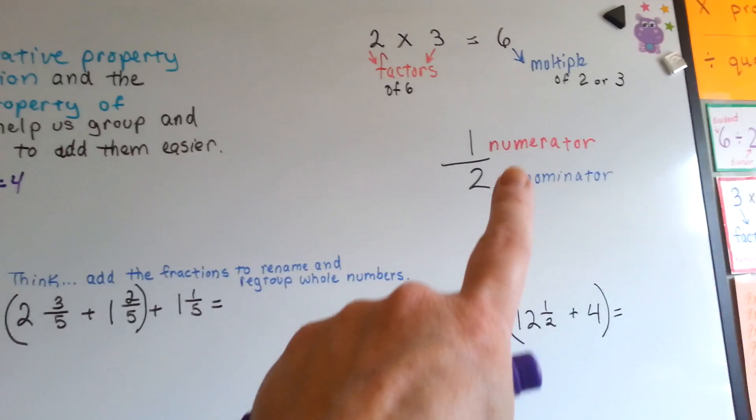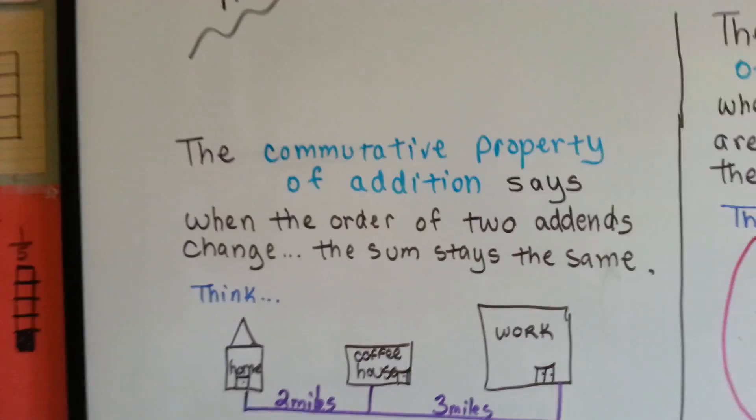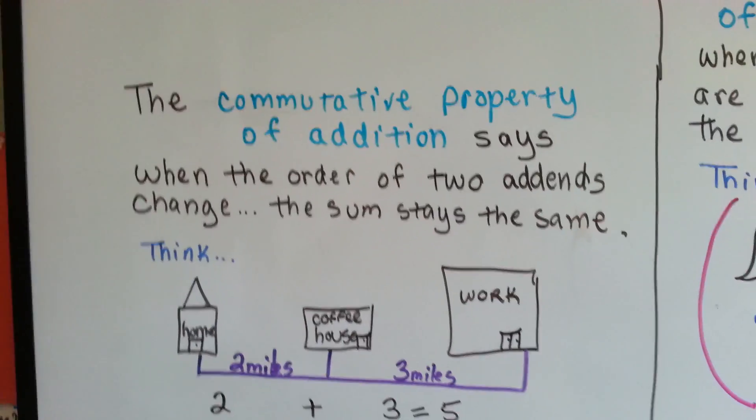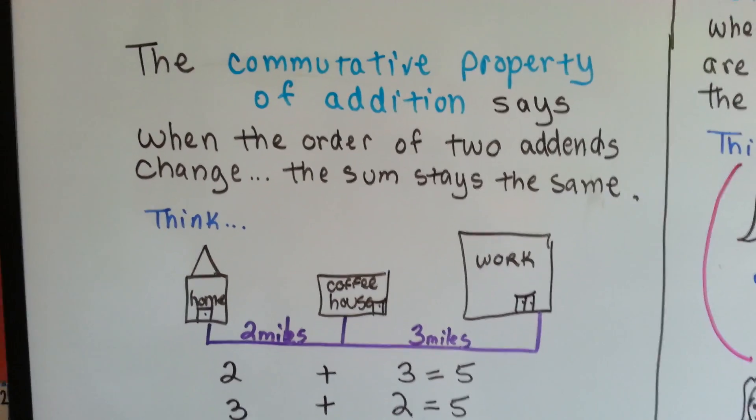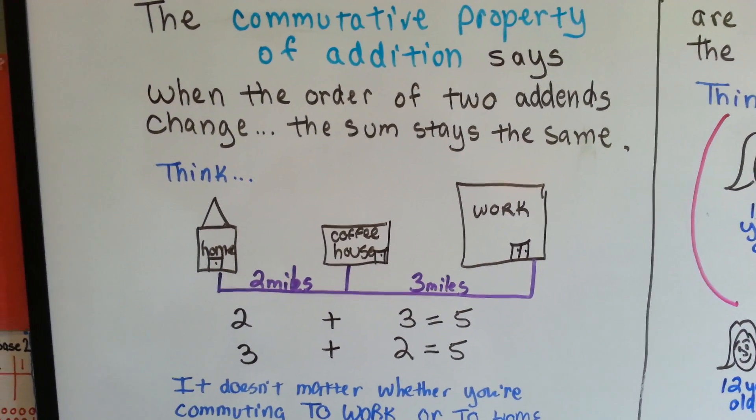Remember that the top is the numerator and the bottom is the denominator. Let's talk about the commutative property. The commutative property of addition says when the order of two addends change, the sum stays the same.